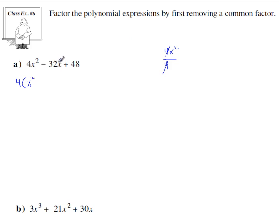Next term will be negative 32x divided by 4. Negative 32 divided by 4 is negative 8, so you get negative 8x. And the last term, 48 divided by 4 is 12.